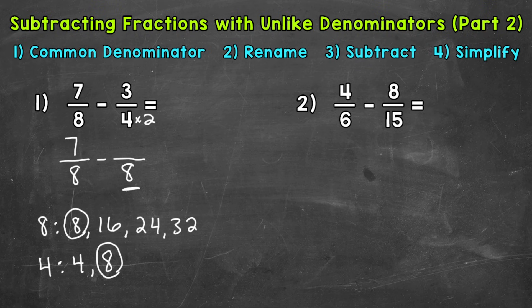So whatever I do to the denominator, I have to do to the numerator in order to keep these fractions equivalent. I don't want to change the value of the problem at all. So I need to multiply the numerator by 2 as well. 3 times 2 gives us 6. So 6/8 is equivalent to 3/4. We now have that common denominator of 8, so we are ready to subtract.